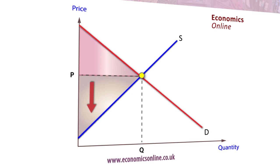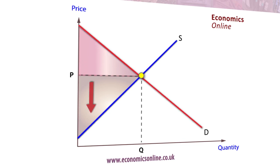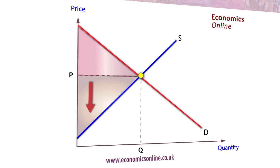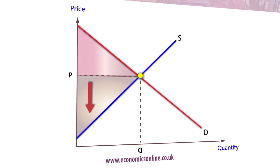The price producers are prepared to supply at is reflected in the upward sloping supply curve. Graphically, it is the area from the supply curve up to the price line.